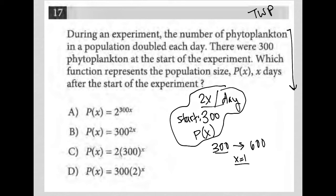then which equation allows me to plug one in for x and I get 600 out because I know that's what I expect. I can even take that one step further and say I'd expect when x equals two that I'm at 1200, right? Because I double from this point.